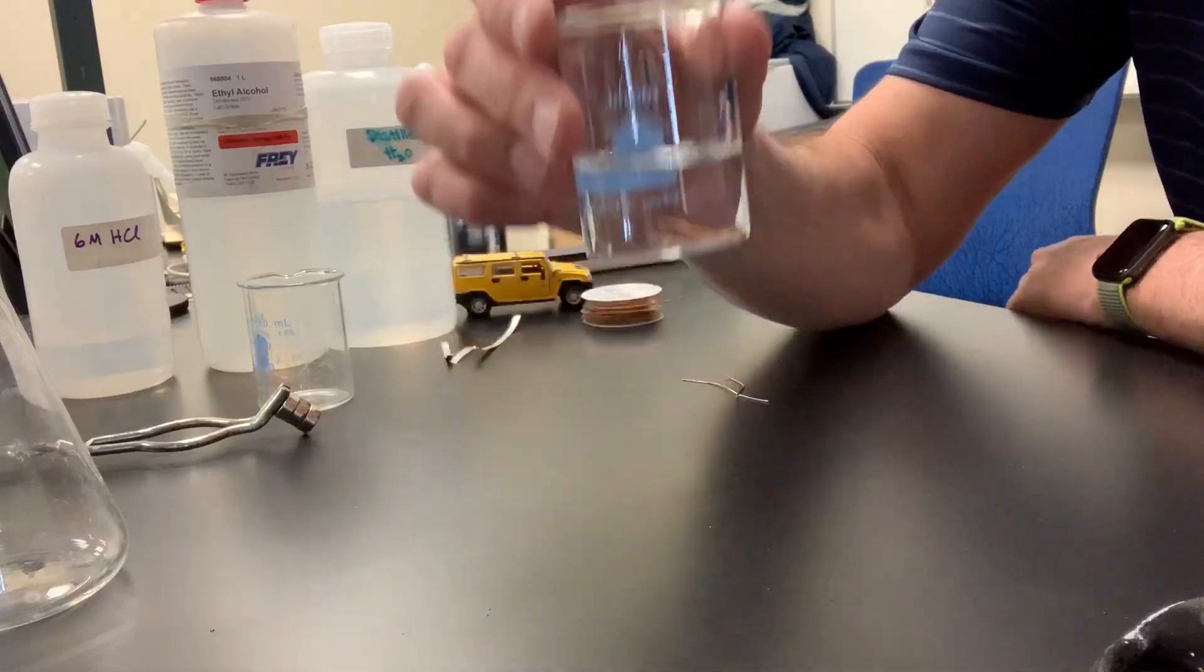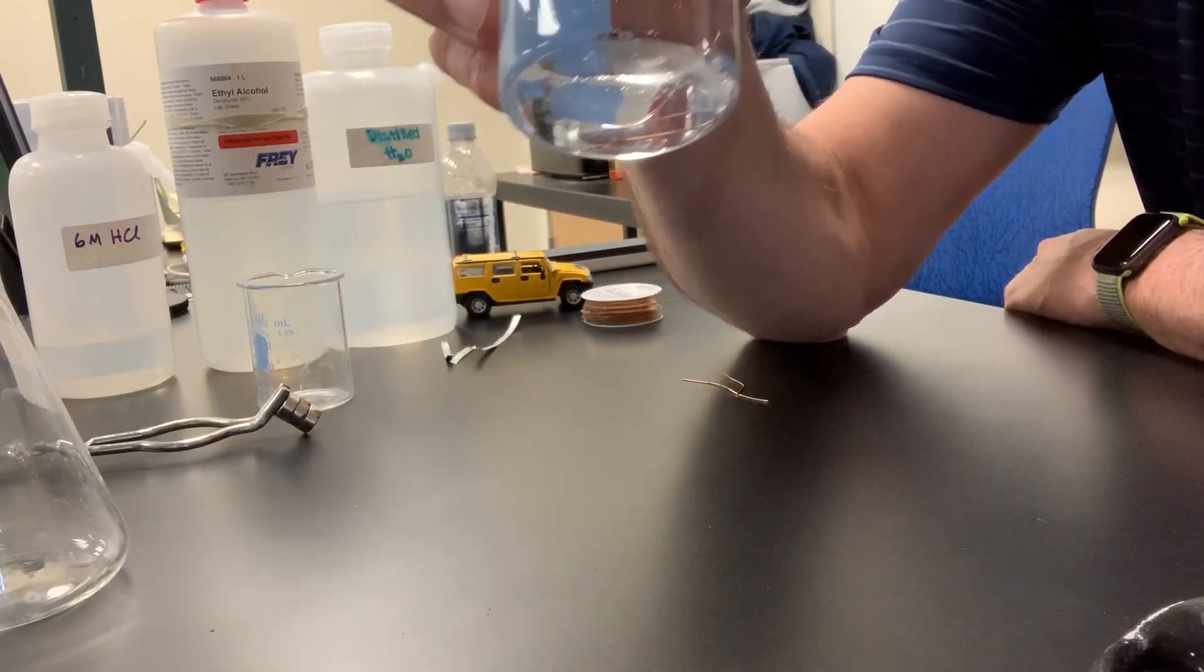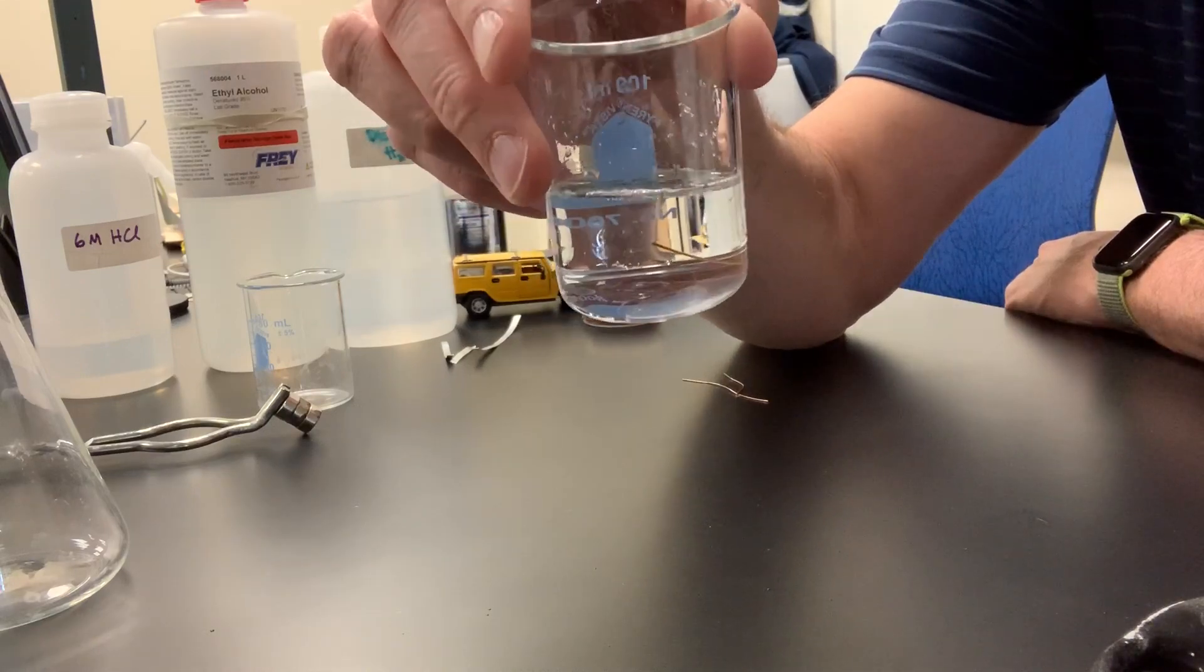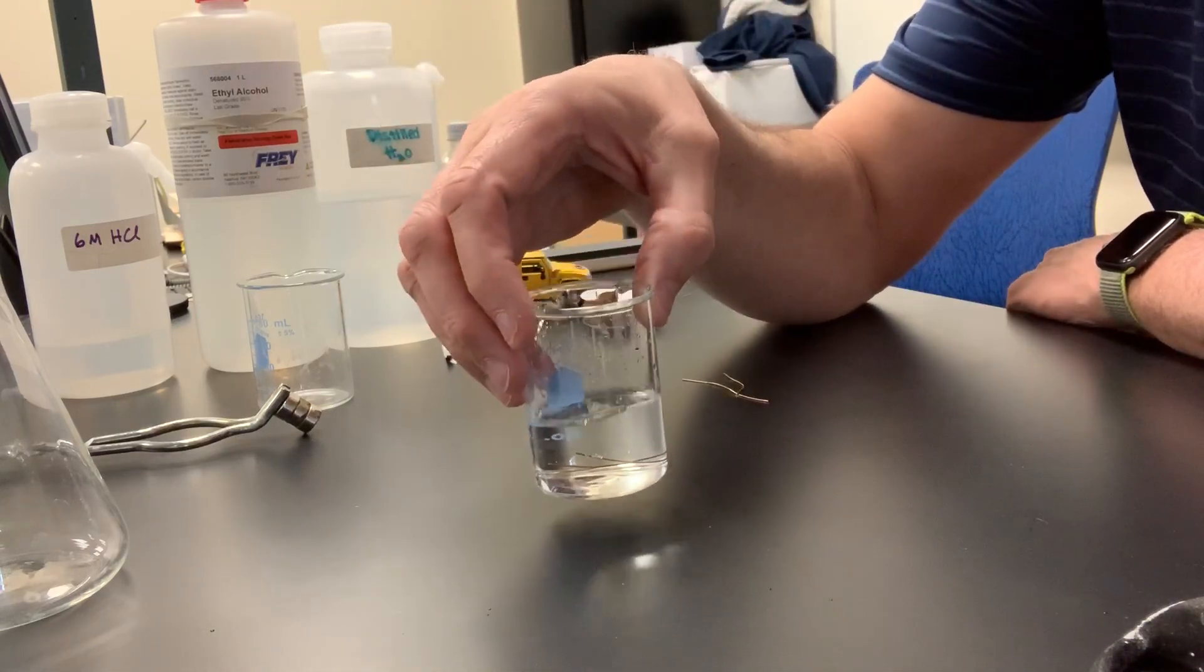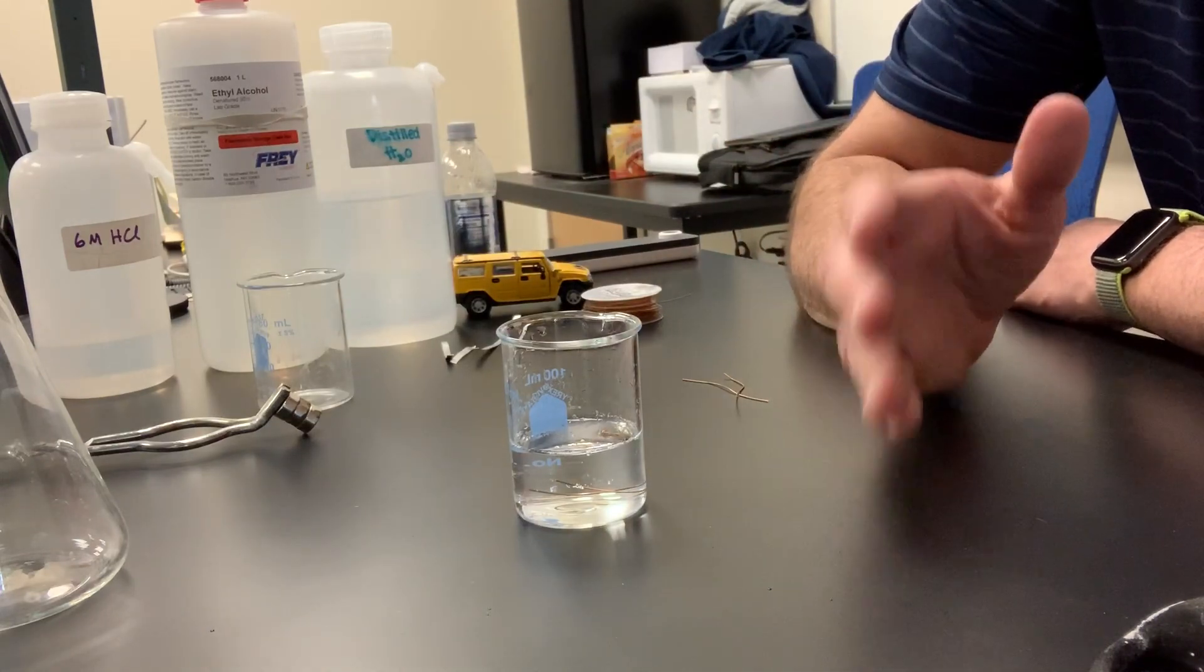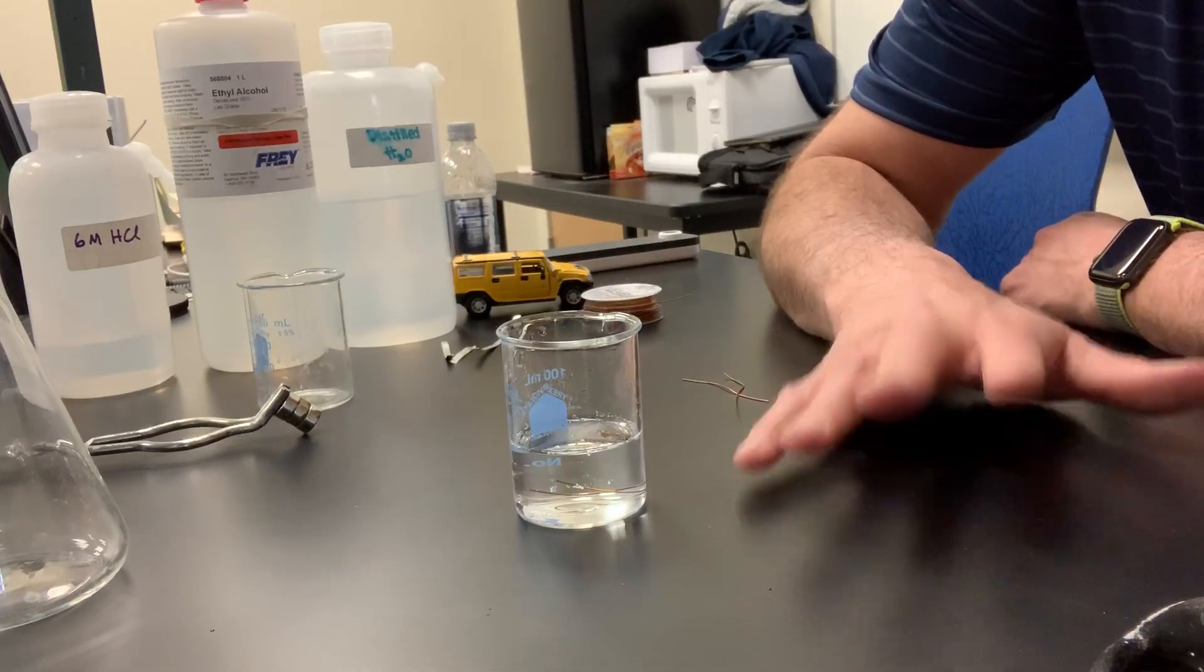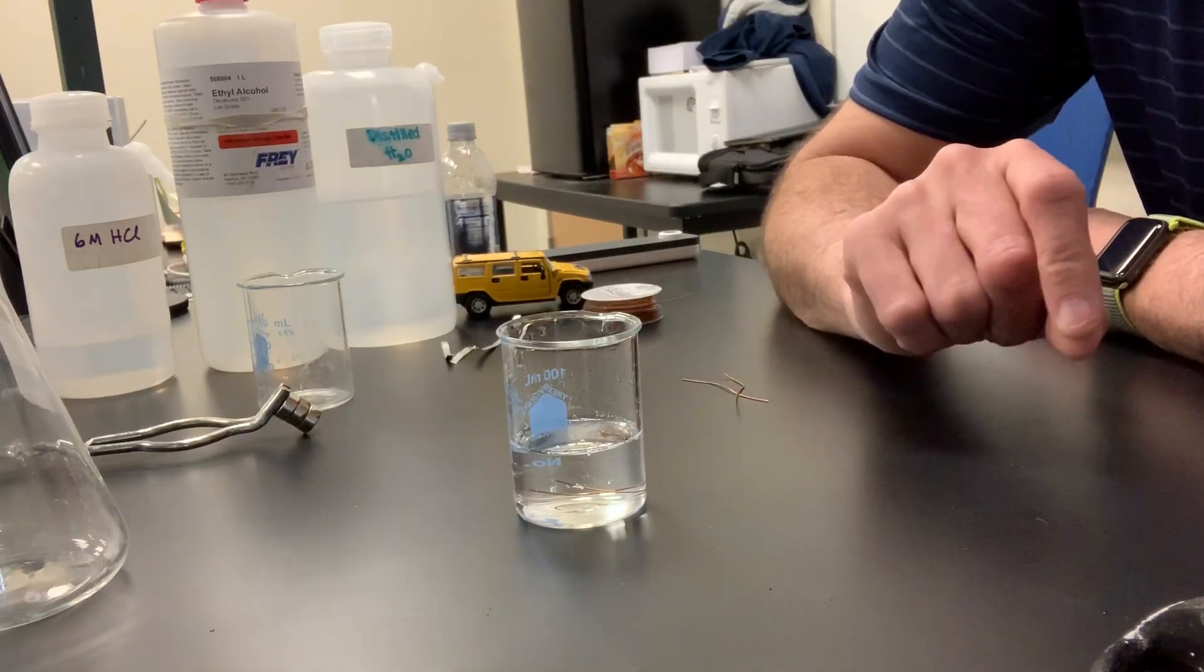And we're going to notice that it doesn't appear as though that copper metal is dissolving in the water. So we would say, when something doesn't dissolve in water, that it's insoluble. Now, isn't that a characteristic that describes this piece of copper? It does not dissolve in water. It is insoluble.